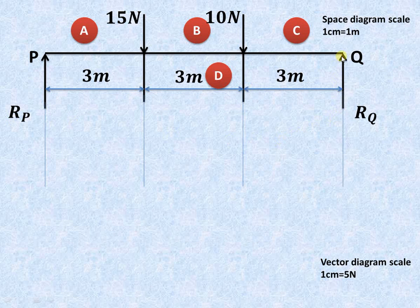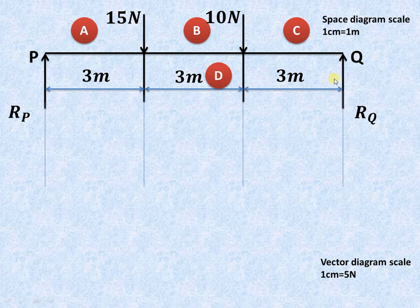The beam is subjected to point loads of 15 Newton and 10 Newton, as shown, at a distance of 3 meters from the left-hand support, then 3 meters further. From the right-hand support, it is again subjected to a point load of 10 Newton.